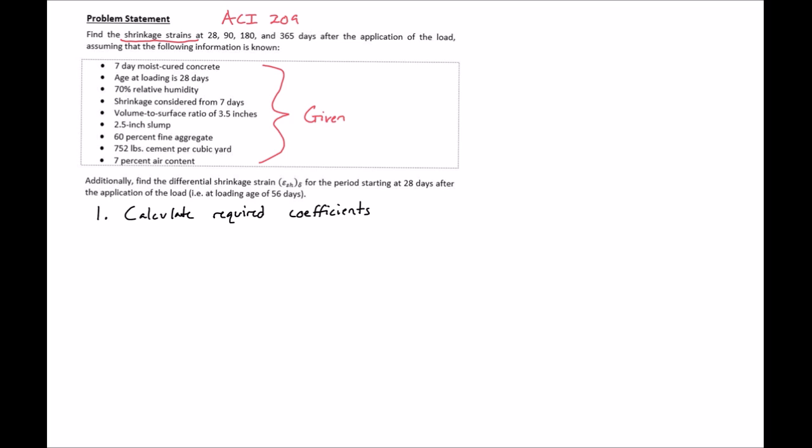The first coefficient that we'll need to calculate is our curing factor. In ACI 209 our curing factor can be found in table 253, and we can see that for a 7-day moist cure we'll have a curing factor of 1.0.